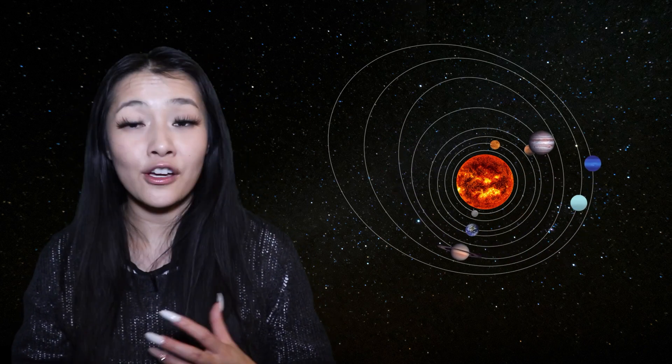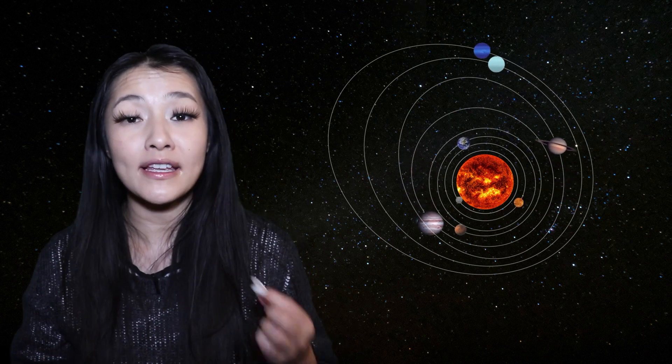However even if we account for the fact that sometimes planets are closer to the Sun and at other times they're further away and therefore also the same is true with respect to each other, Venus is still our closest neighbor.